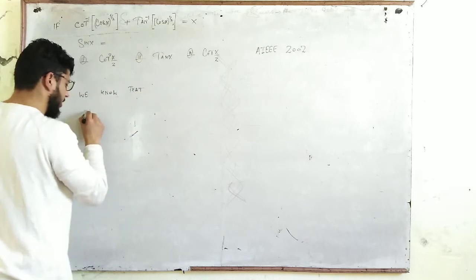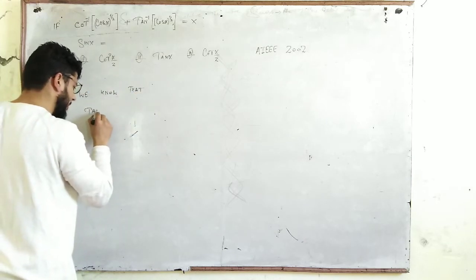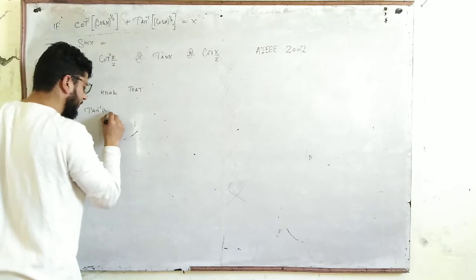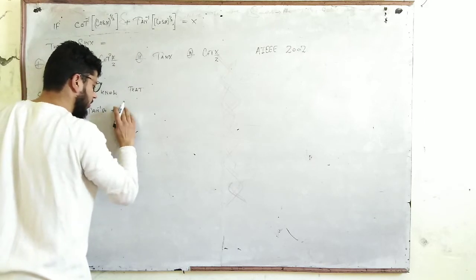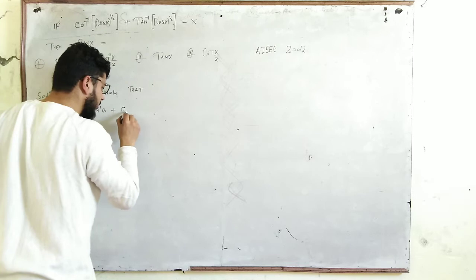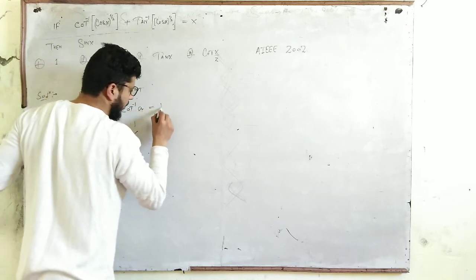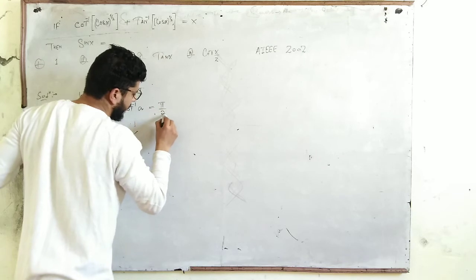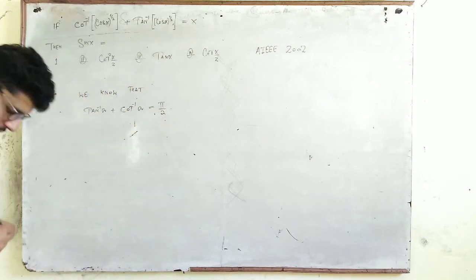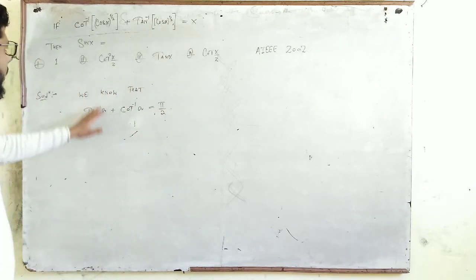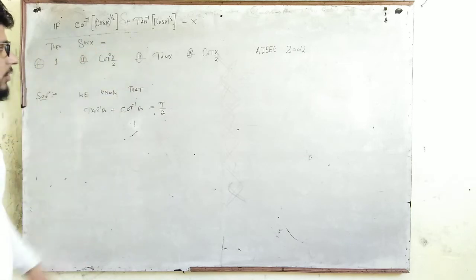The key identity we need is: tangent inverse a plus cotangent inverse a equals pi by 2. That is the crux of this question.